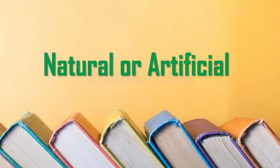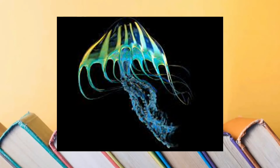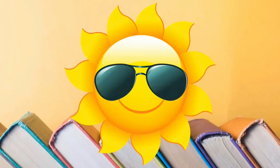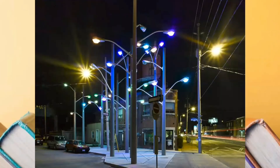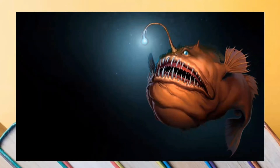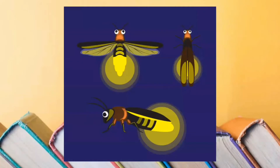Last time, we were able to identify whether the light is natural or artificial. Let's do a quick flashback. Light that comes from the lamp is artificial. The light coming from a jellyfish is natural light. From the electric ball, it's artificial light. Light from the sun is natural. Street lights are artificial. From the moon and stars, natural light. From the anglerfish, natural light. The headlights of cars are artificial. And from the fireflies, it's natural light.